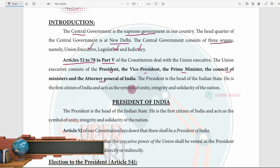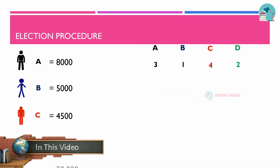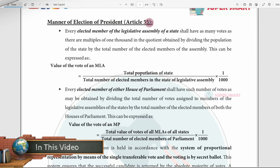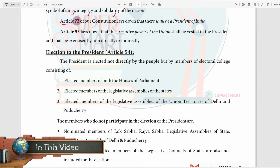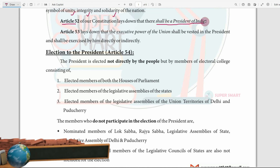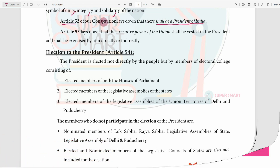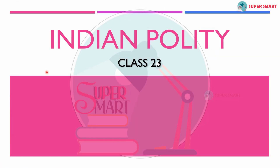In this video, we will see the President's complete details. In total, we have 20,000 votes. So if you have 20,000 votes, you will have a poll. In Article 55 we will tell you how much the election will be. In Article 52 we will tell you about the President of India. Hi guys, welcome back to my channel SuperSmart.